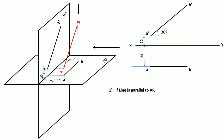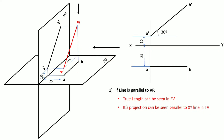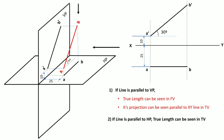In summary, if a line is parallel to the vertical plane, we get two predictions: first, the true length can be seen in the front view; and second, its projection in the top view will be parallel to the XY line. In another case, if a line is parallel to the horizontal plane, the predictions are reversed — the true length can be seen in the top view, and its projection in the front view will be parallel to the XY line. These are the basics of projection of lines required for solving complex problems.